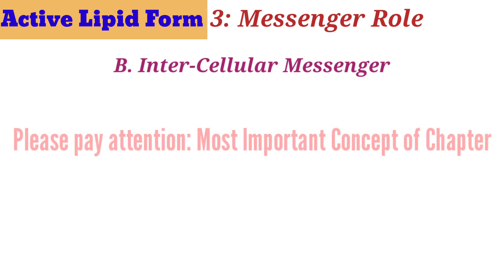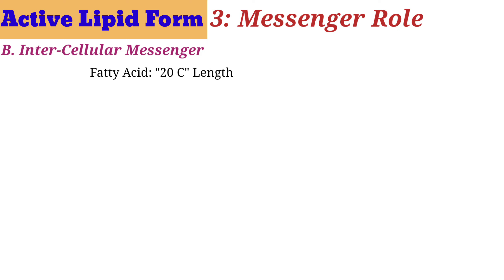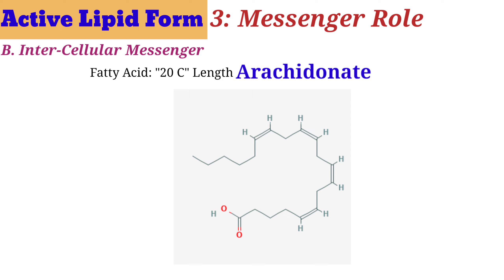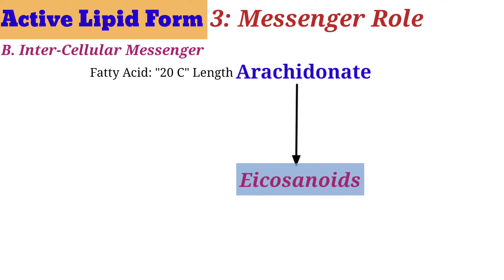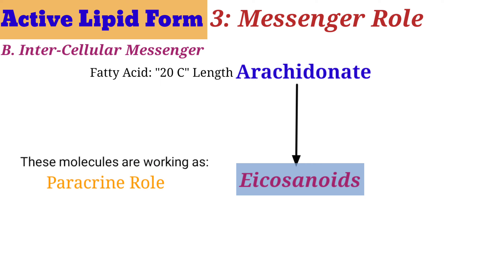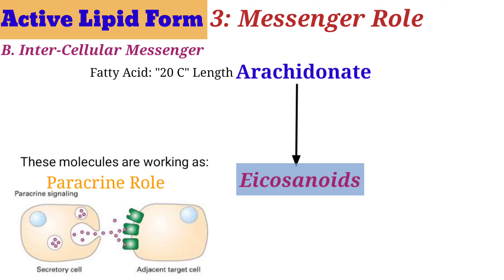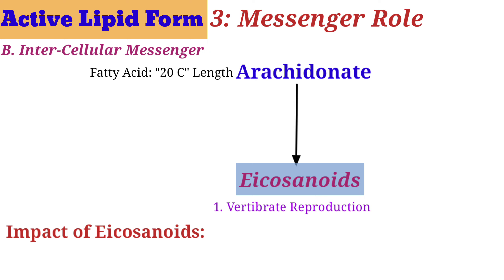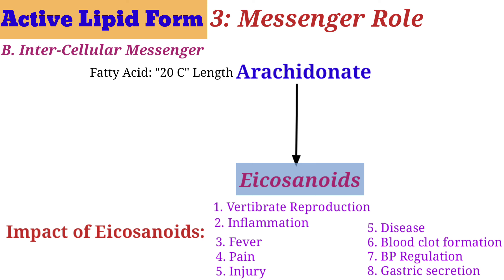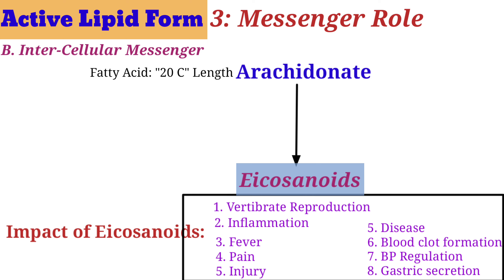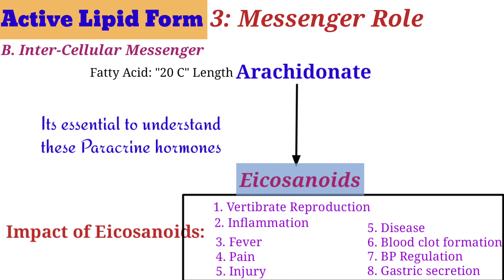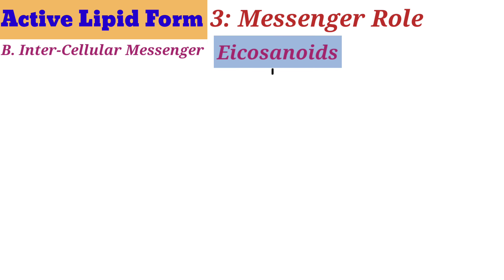Now for the most important topic of this lecture — intercellular messengers. The 20-carbon chain long fatty acid known as arachidonic acid is the precursor for production of eicosanoid products. These eicosanoid molecules are famous as paracrine hormones, acting on nearby cells only. They have a huge impact on vertebrate reproduction, inflammation, fever, pain, injury, disease, blood clot formation, blood pressure regulation, and gastric acid secretion. Eicosanoids show three different classes: prostaglandins (PG), thromboxanes, and leukotrienes.